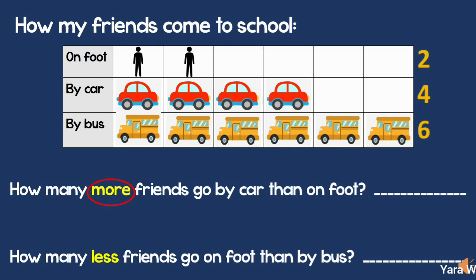How many more friends go by car than on foot? I'm comparing those coming by car and those coming on foot. Remember, start subtraction with the bigger number. 4 minus 2 equals 2. So 2 more friends go by car than on foot.